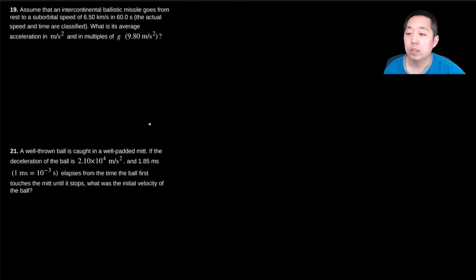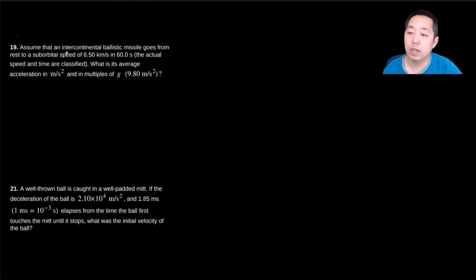Okay, so assume that an intercontinental ballistic missile goes from rest to a suborbital speed of 6.5 kilometers per second in 60 seconds—the actual speed and time are classified. What is its average acceleration in multiples of G? Again,